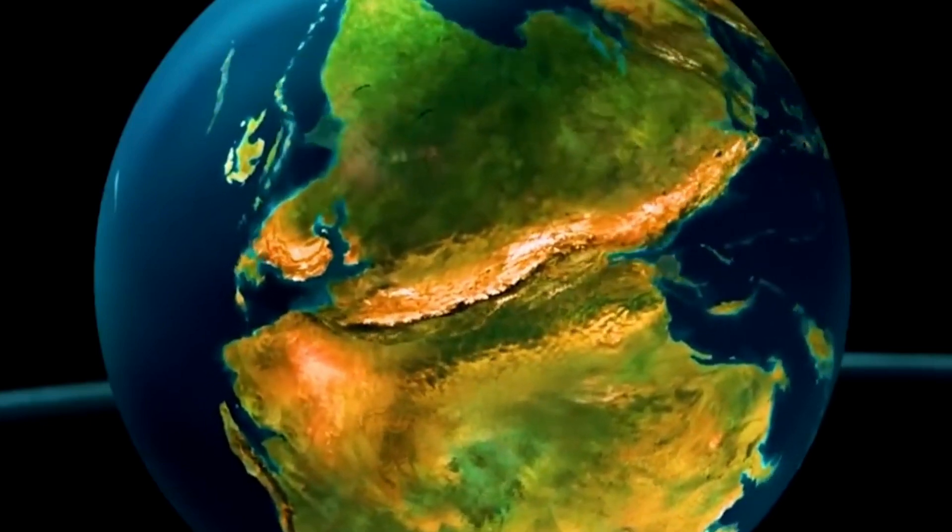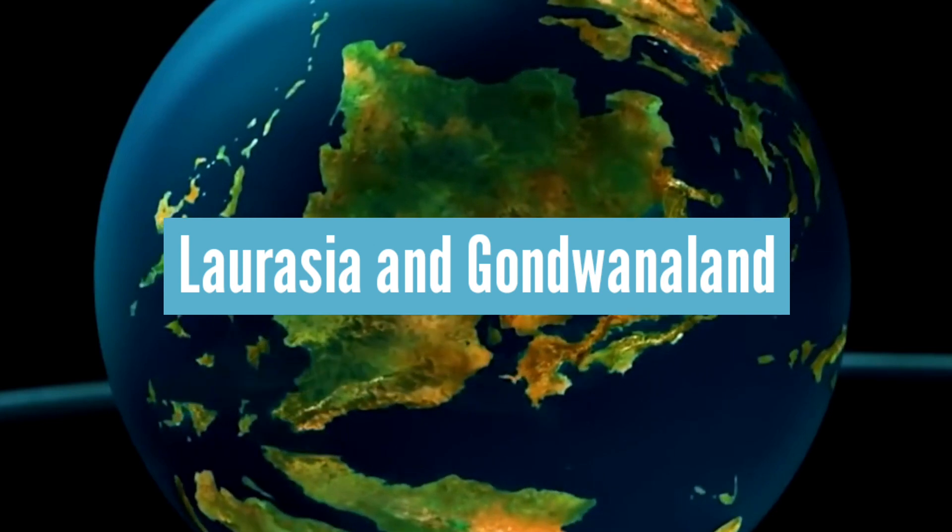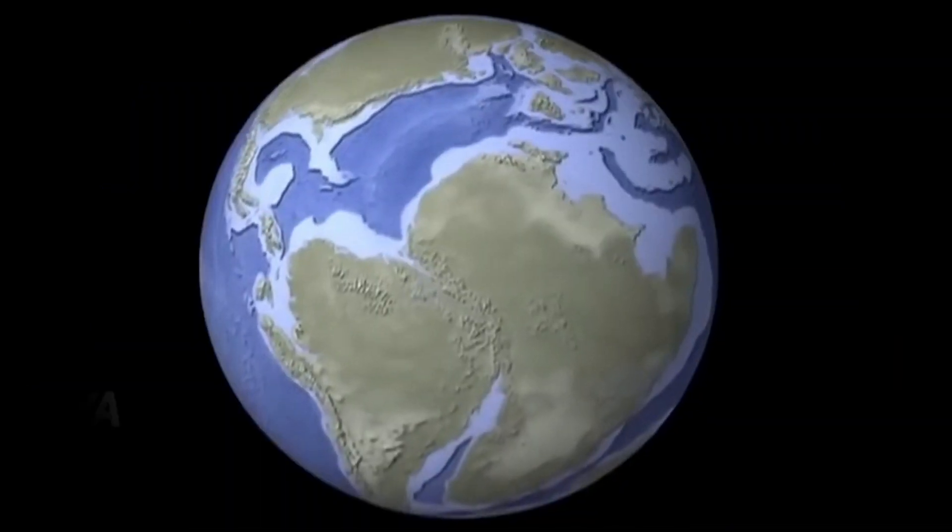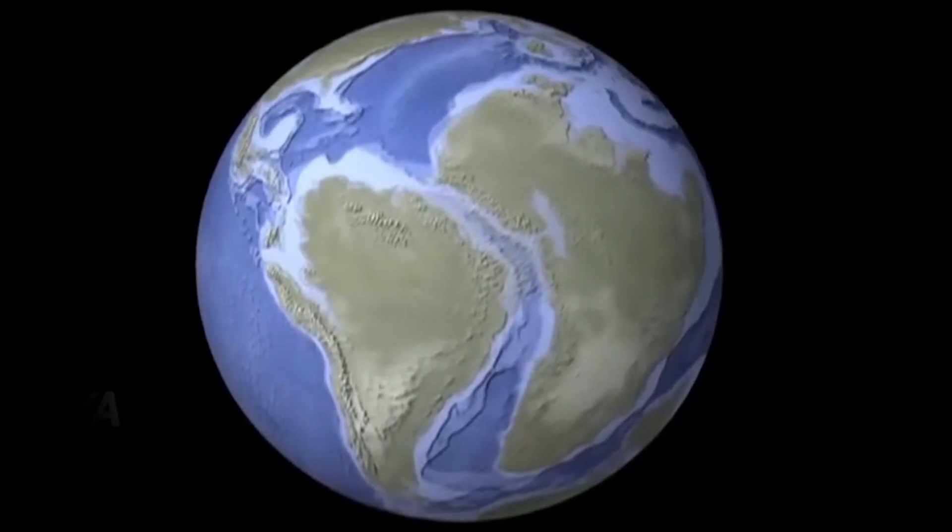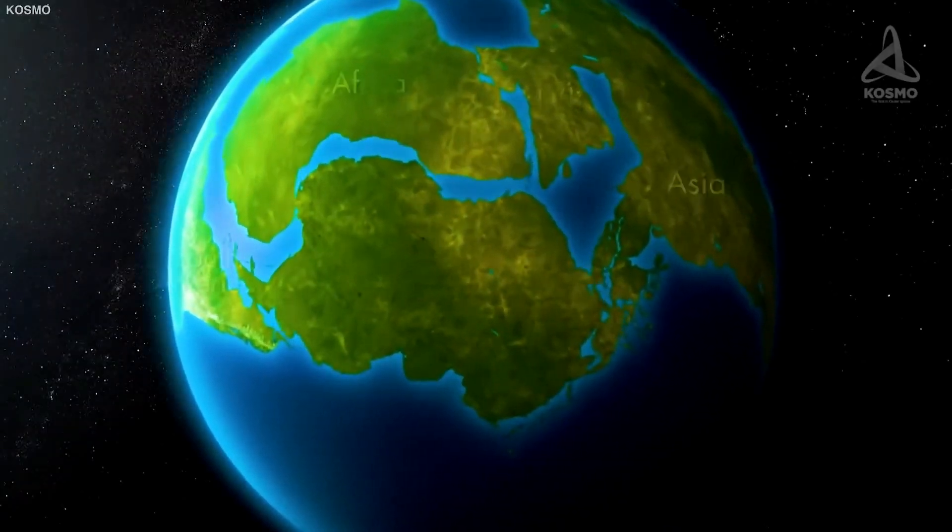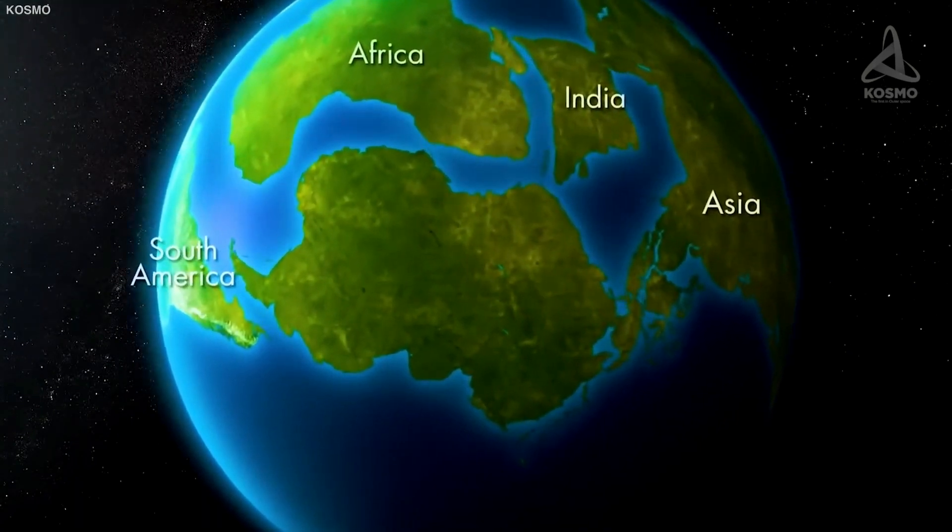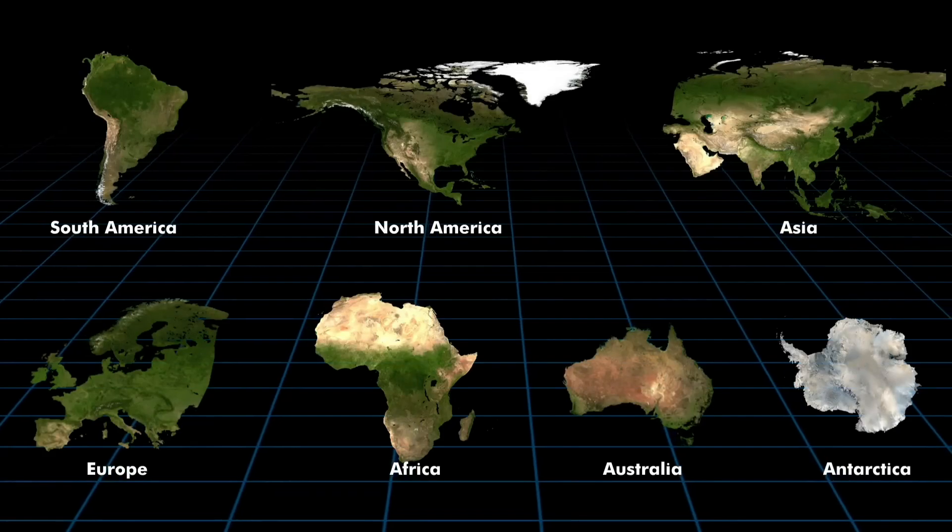During the Triassic period, Pangaea split into two new continents, Laurasia and Gondwanaland. The more enormous continent, Gondwanaland, divided into the present continents of South America, Africa, and Europe, while the smaller continent, Laurasia, moved north and finally broke off into what is now known as Europe, Asia, North America, Antarctica, and Australia.